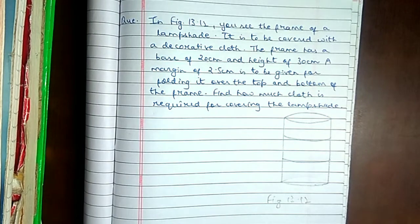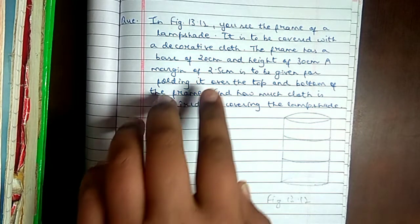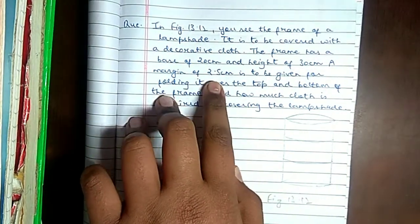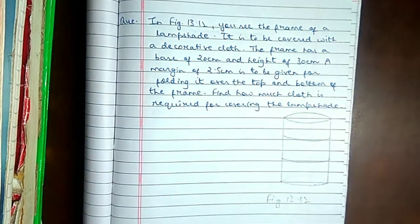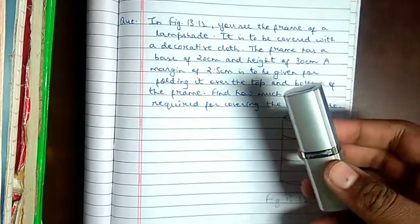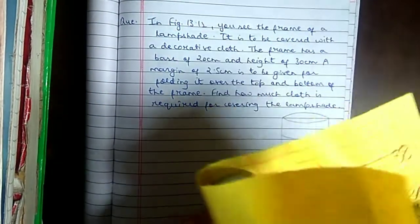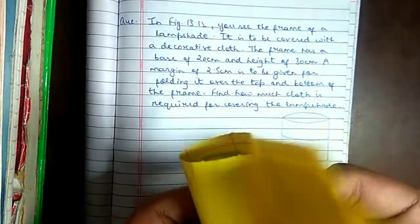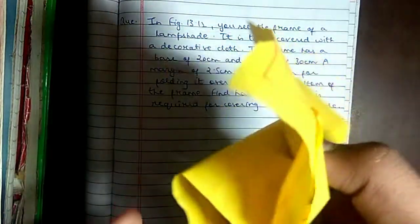But the twist is that we will use 2.5 cm margin to fold. Let's explain. Suppose this is our object. This is our cloth. I will fold it. And now it is open. It is open from the top and bottom.